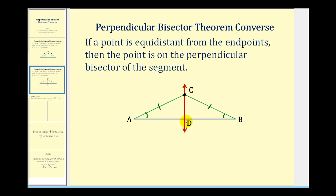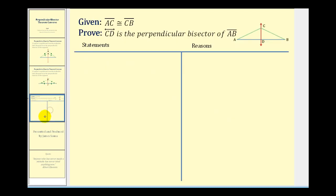Next, we'll define D as the midpoint of segment AB, so segment AD would be congruent to segment BD. By side-angle-side, these two triangles would be congruent. Then, given that angle ADC and angle BDC form a linear pair and are congruent, they must each measure 90 degrees, so line CD would be perpendicular to segment AB. This proof is a little involved, but let's go ahead and write it up.